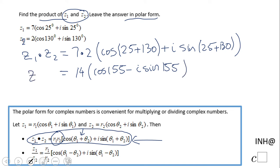We can leave it like that - that's what they want. If you want the standard form, you grab a calculator and do cosine of 155 and sine of 155, multiply by 14, and you have that number in the standard form.